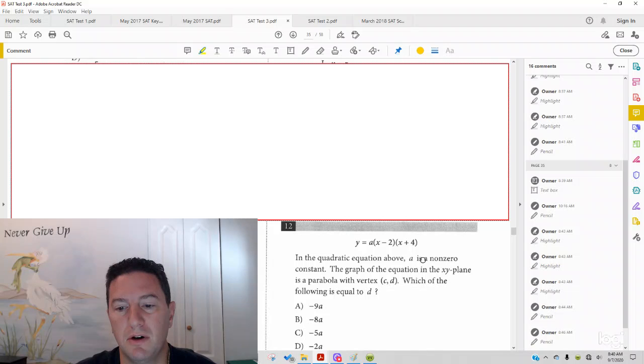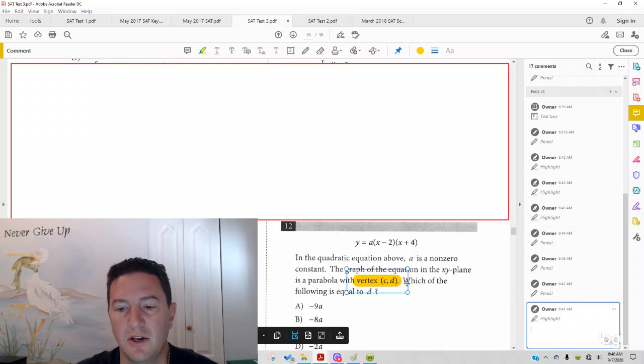The problem reads: in the quadratic equation above, a is a non-zero constant. The graph of the equation xy-plane is a parabola with vertex cd, which of the following is equal to d.